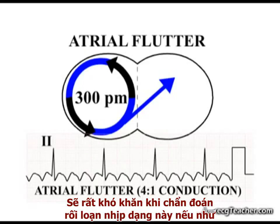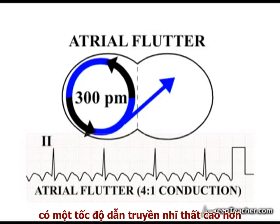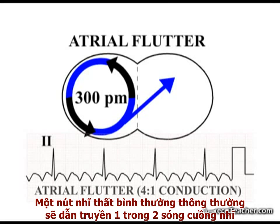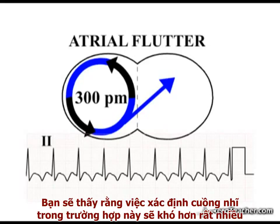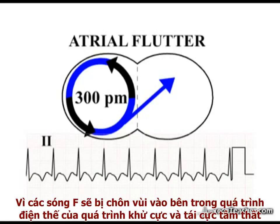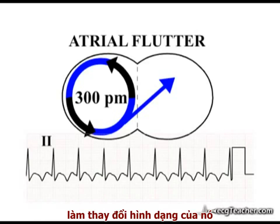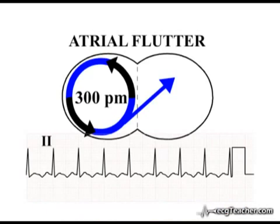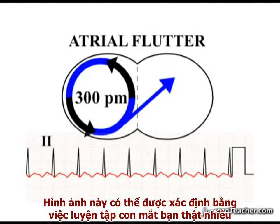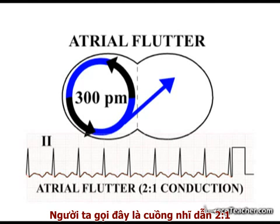Real problems in diagnosing this arrhythmia arise when higher rates of AV conduction are present. A healthy AV node will typically conduct every second flutter wave, resulting in a regular, narrow complex tachycardia of 150 beats per minute. Identification of flutter waves in this situation is much more difficult, as the electrical events of ventricular depolarization and repolarization fuse with every second wave, obscuring it and also distorting its shape. The diagnosis may be particularly difficult when, as is often the case, the flutter waves are of low amplitude. Yet even here, the pattern can be identified by the practiced eye. This is atrial flutter with 2 to 1 conduction.